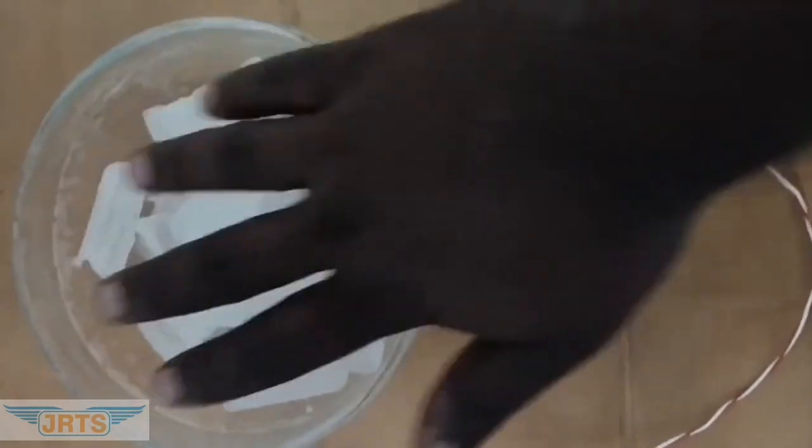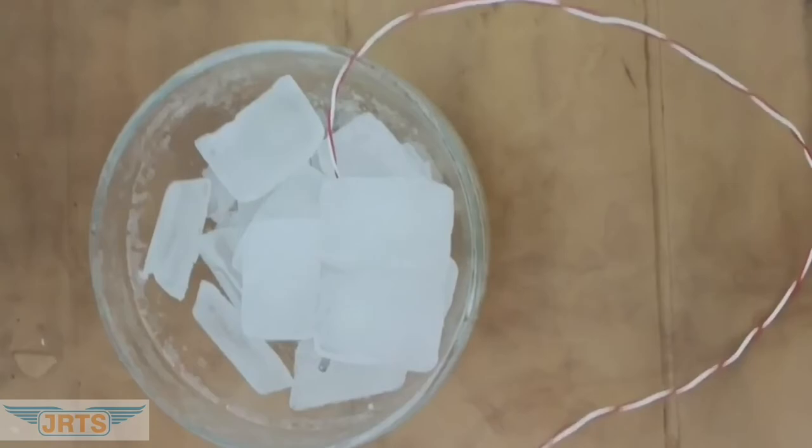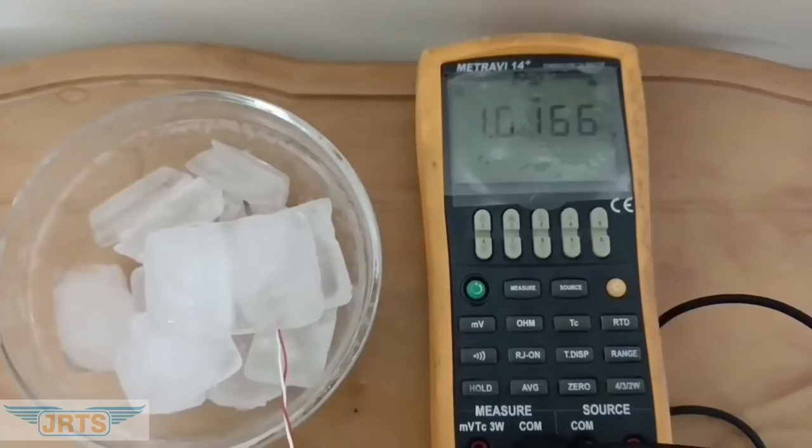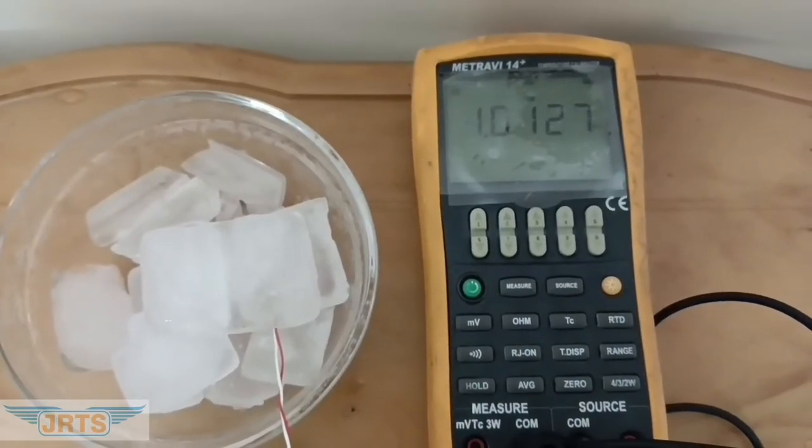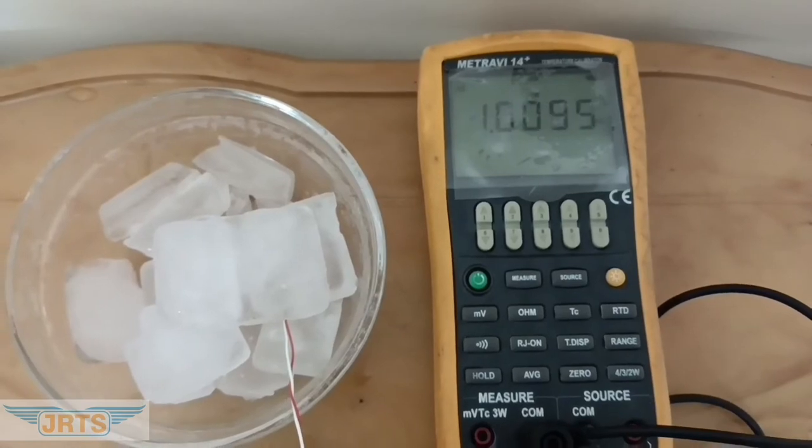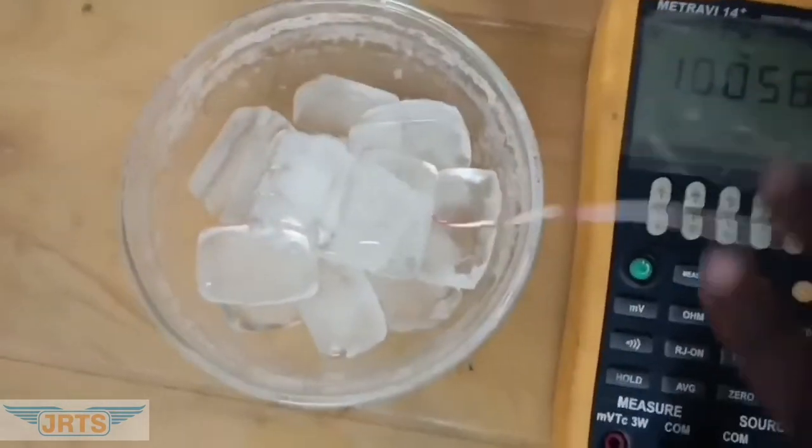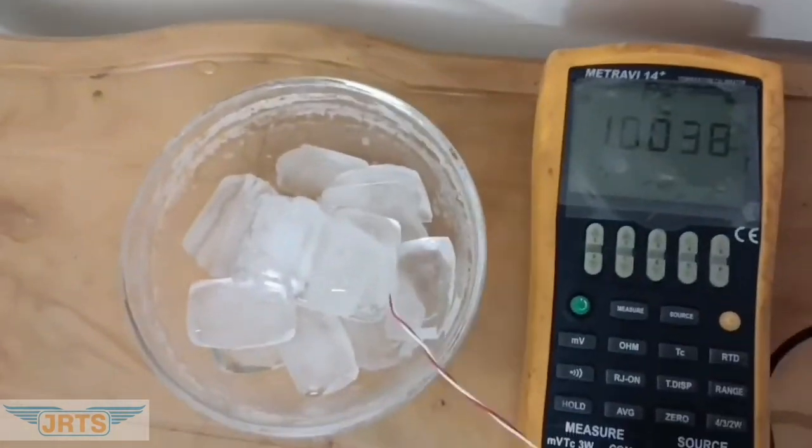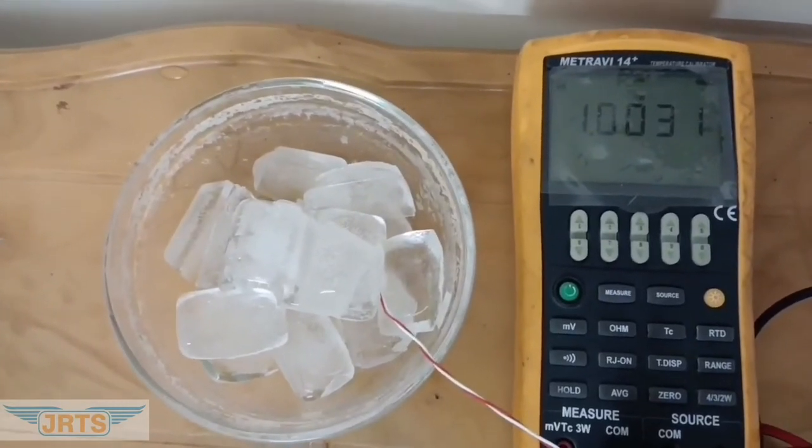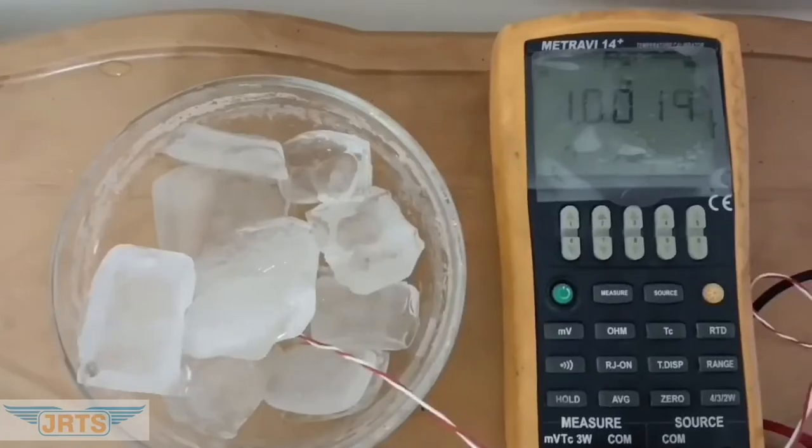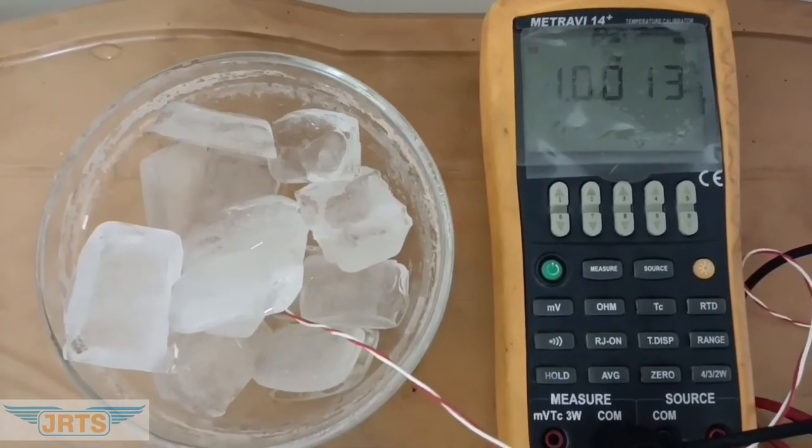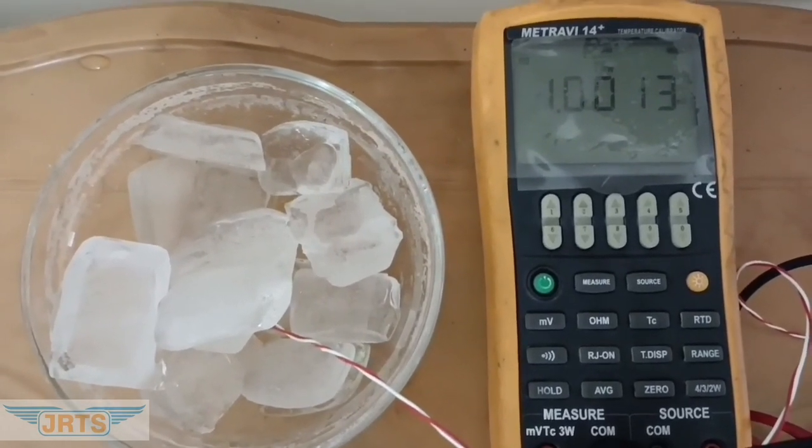We all know that temperature of ice is 0 degree Celsius. Now the resistance values are gradually decreasing. The display shows reading in kilo ohm. Now the values are almost settled.